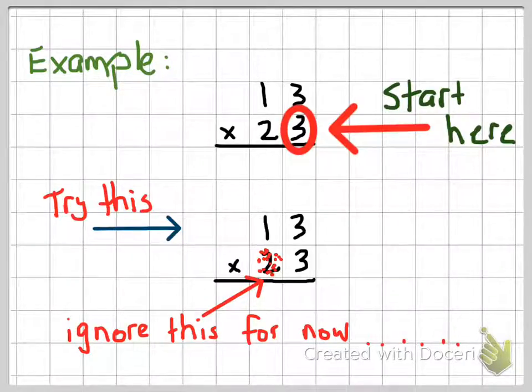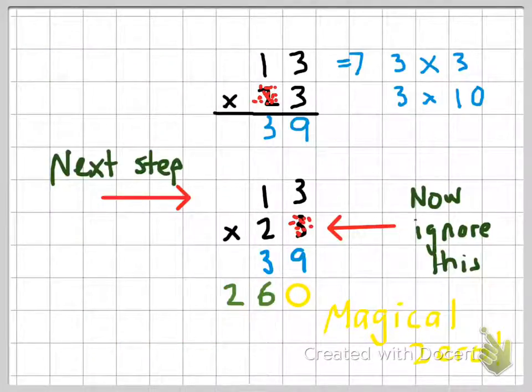Here's an example: we've got 13 times 23, so I want you to start in that corner there with the number three. In this example, I want you to ignore the number two for now. So we'll come back to that one later. First thing we do is we go three times three is nine, so I put that in my ones column. Next I go three times one is three, which is actually a ten. So we've done three times thirteen and that makes 39.